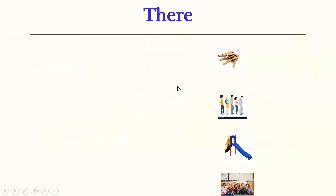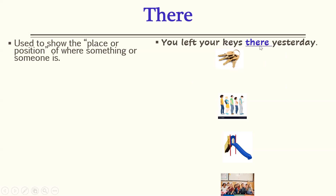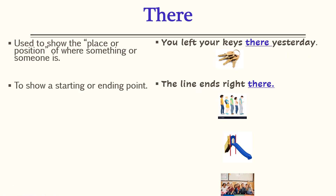The first version of the word there that's probably the easiest for you to learn is the one that's spelled T-H-E-R-E. This version of the word there is used to show the place or position of where something or someone is. I want you to look at this set of keys. If I was going to write a sentence that said 'you left your keys there,' this is the form of there that I would use. Another way that you would use this word is if you were showing a starting point or an ending point. Do you see this line of people? If I said in writing 'the line ends right there,' again, I would use this form of there.